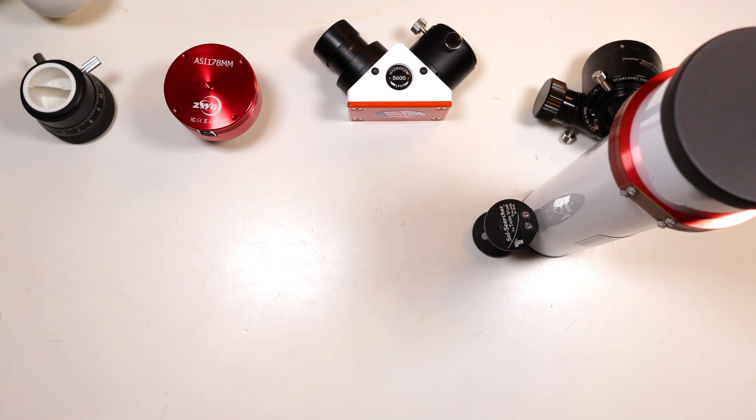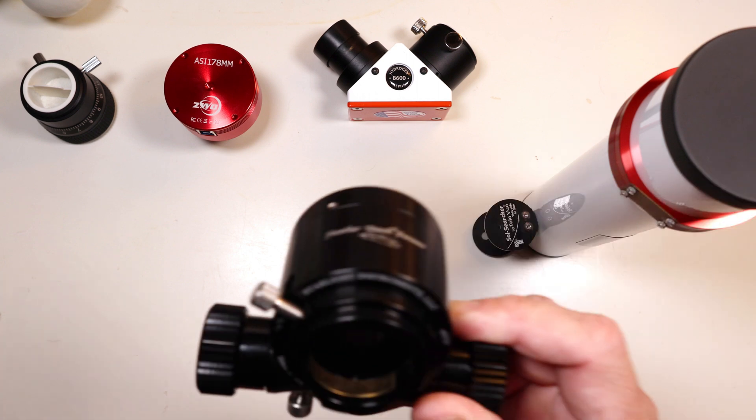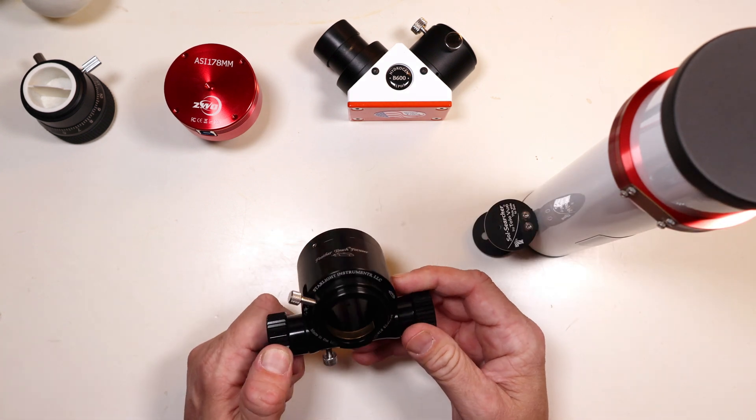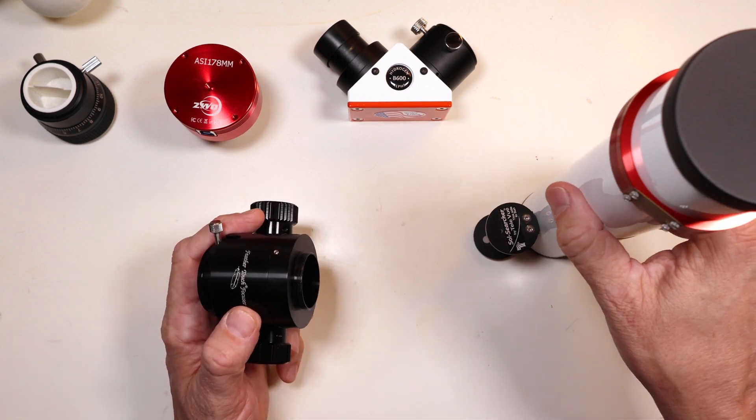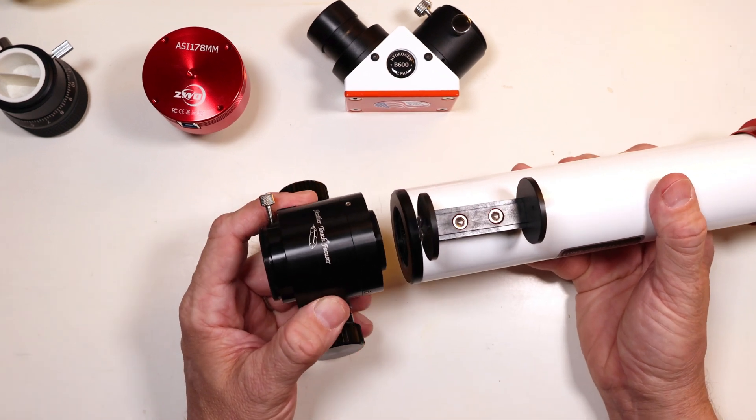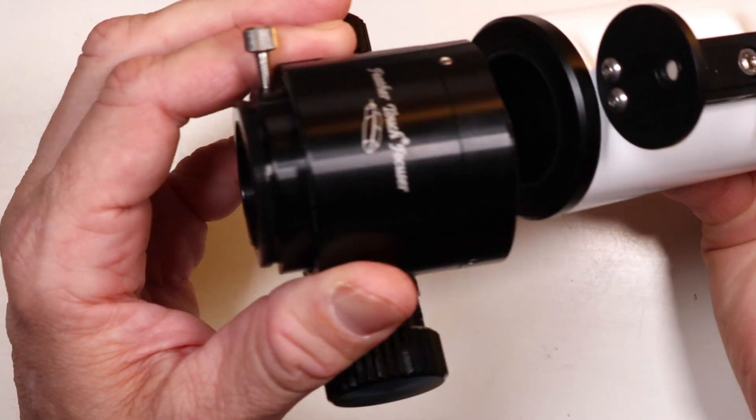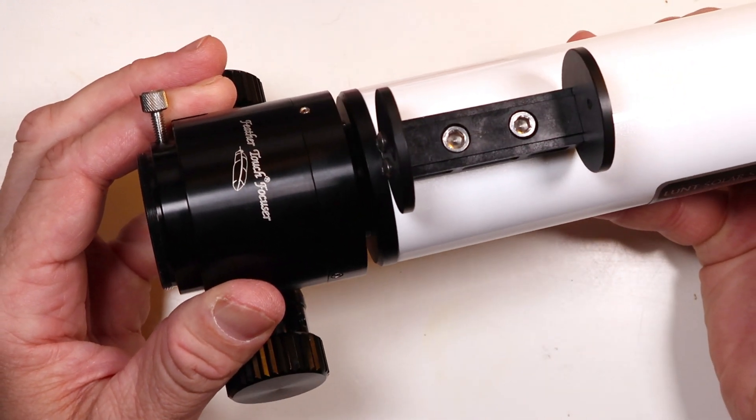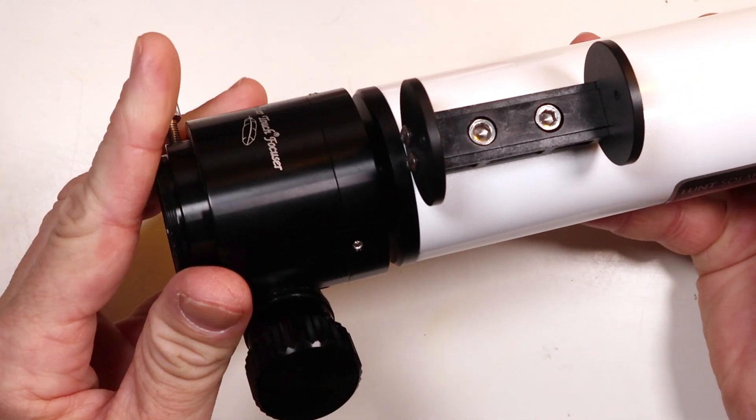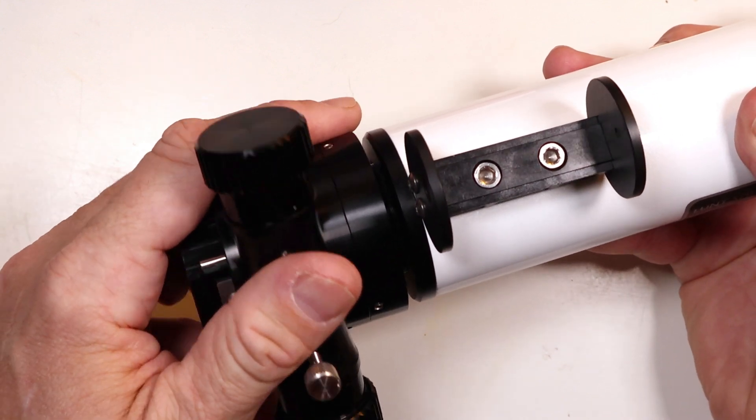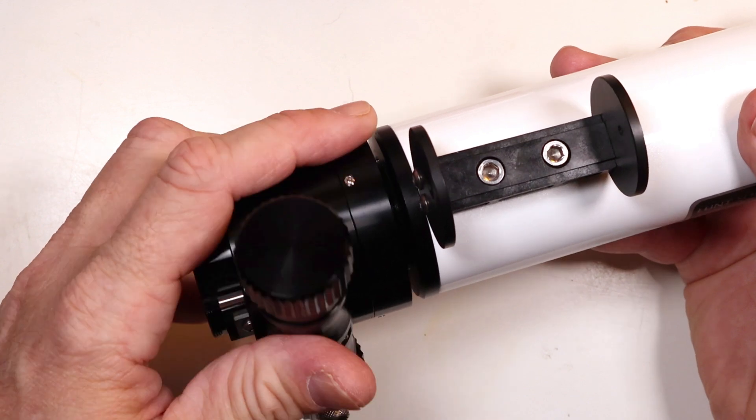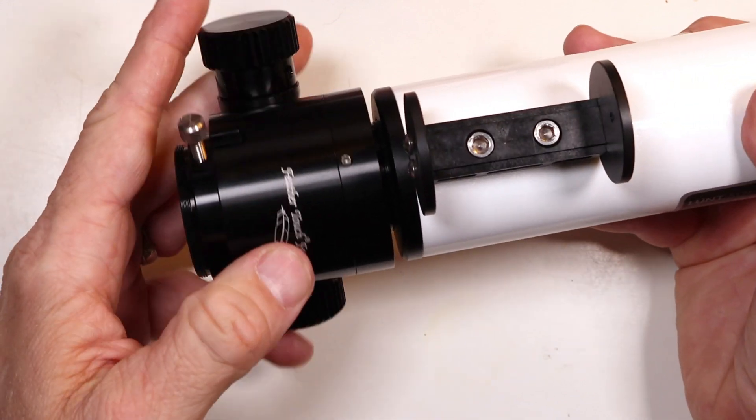Once the old helical focuser has been removed, you're now ready to install your brand new Starlight Instruments Feather Touch Focuser. So what I'm going to do is take the draw tube and initially I am going to place it into the T2 threads and turn it counterclockwise because I don't want to make sure I get this on incorrectly. I just felt it skip on one of the threads, so now I'm going to turn it clockwise.